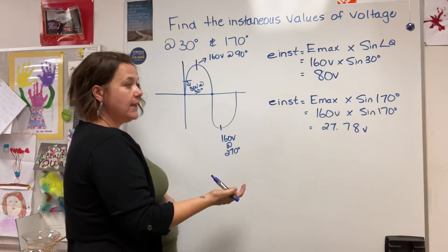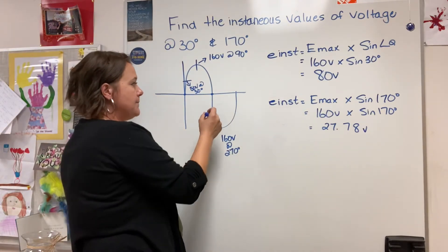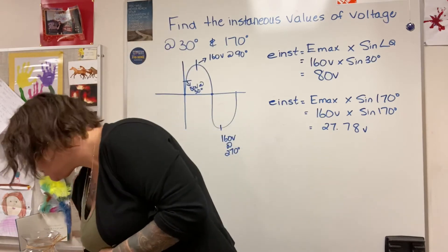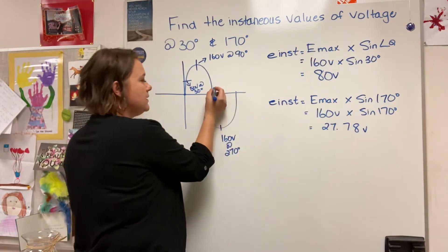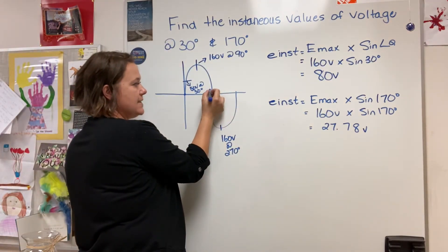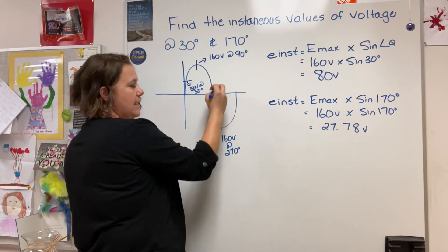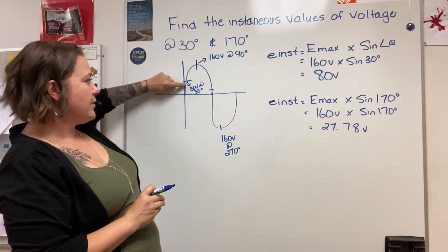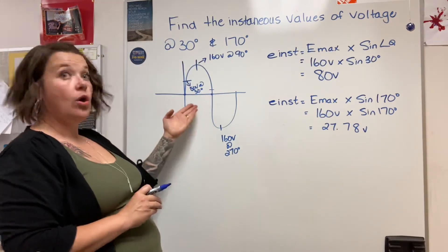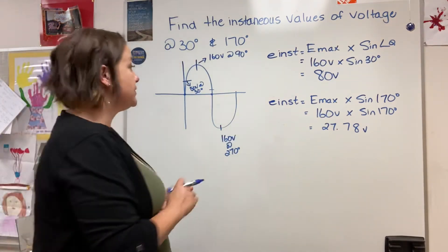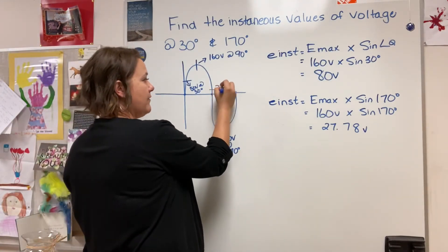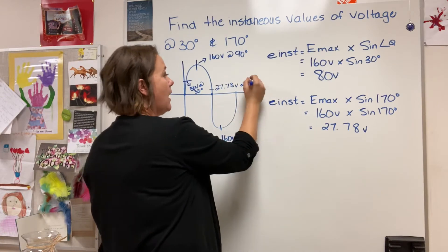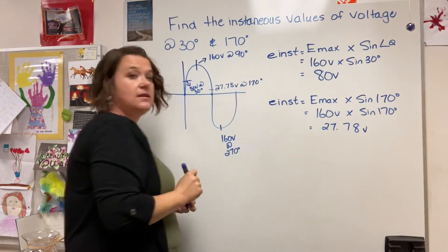When I'm talking to you about 170, I'm actually looking to be around here. This is 180. Visually you can see that if I'm at 160 here and 30 here that this is going to be a lower smaller value voltage. It works out to be 27.78 volts at 170 degrees.